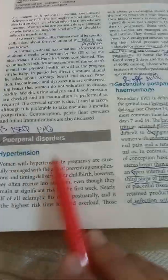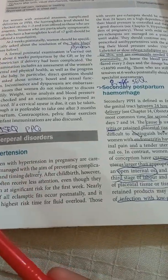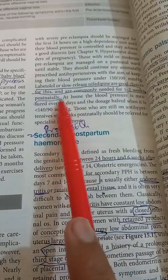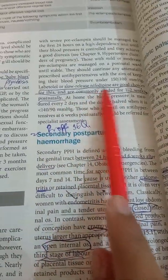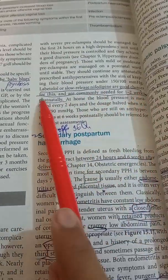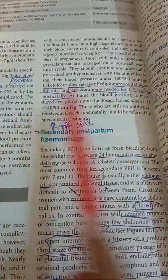Coming to puerperal disorders: hypertension — blood pressure should be maintained and recorded. Treatment with labetalol or slow-release nifedipine are good choices and are commonly needed for one to two weeks postnatally.